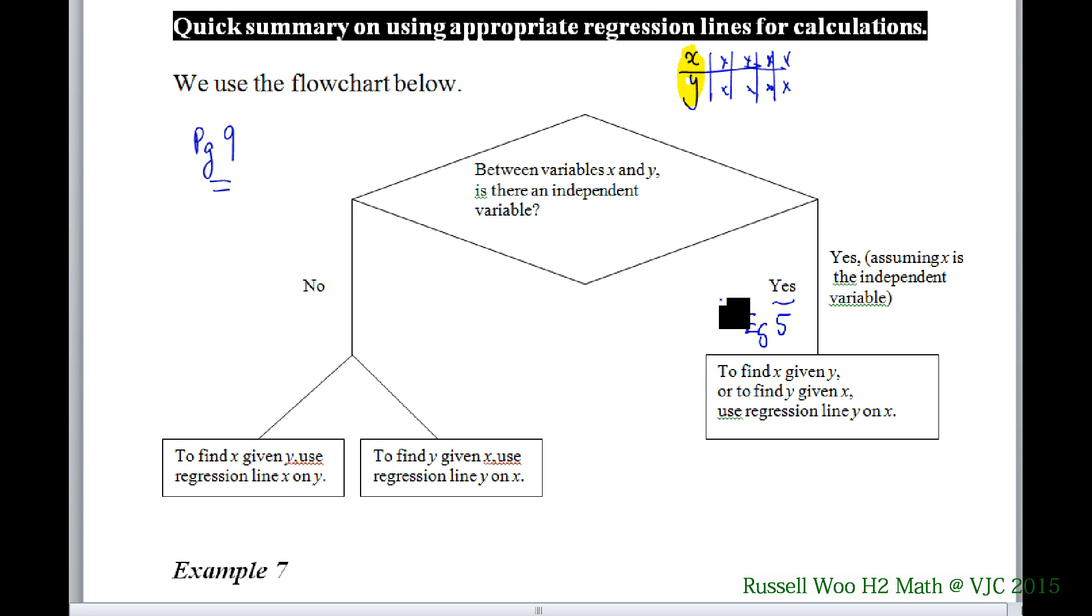Whether you are required to find X given Y or Y given X, you use the same regression line Y on X, assuming X is the E. The moment you have a clear cut independent, just use Y regression line.